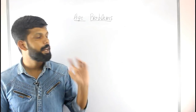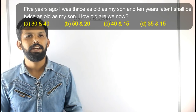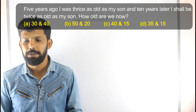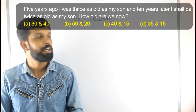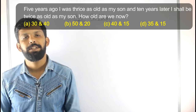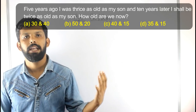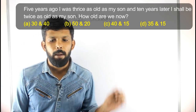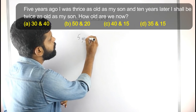Next question: 5 years ago I was twice as old as my son, and 10 years later I shall be twice as old as my son. How old are we now? We will use the ratio method. 5 years ago, the father-to-son ratio was 2 is to 1.